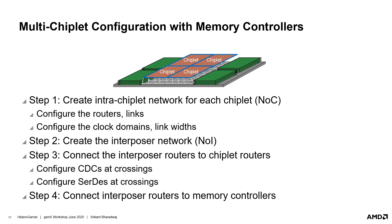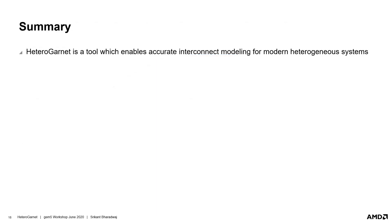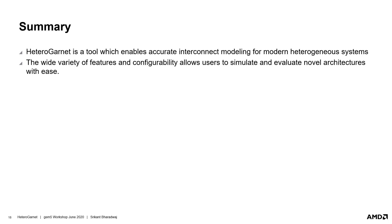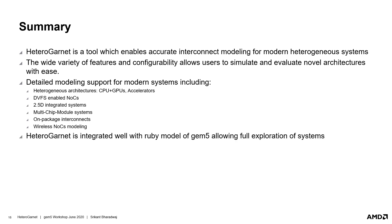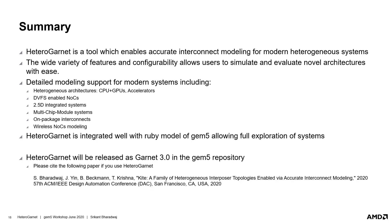Heterogarnet allows you to easily configure modern heterogeneous systems and evaluate them using the rest of the Gem5 infrastructure. In summary, Heterogarnet enables accurate modeling of modern interconnect systems and provides the required features for design exploration. Its flexibility allows evaluation of novel architectures with ease. With Heterogarnet, detailed interconnect studies on modern systems like 2.5D integrated systems, heterogeneous architectures, and even emerging interconnect technologies can be easily and accurately evaluated. It will be released as Garnet 3.0 to the mainline Gem5 repository. You can contact me for any questions about using this tool, and if you do use it, please cite our upcoming paper from DAC. Thank you.